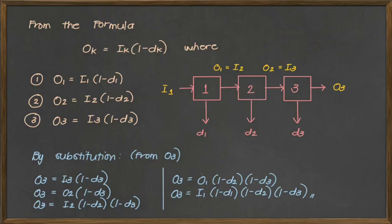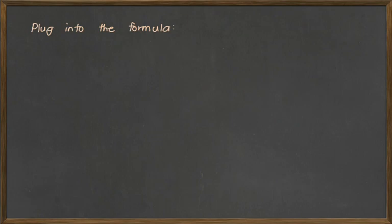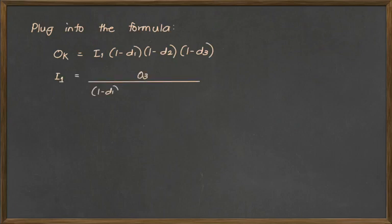And from this derivation, we can safely say that we have arrived with a general formula for a sequential process. So plugging into the formula, O sub k times 1 minus d sub 2 times 1 minus d sub 2 times 1 minus d sub 3. Since I sub 1 is what we're looking for, we will be just manipulating the formula.